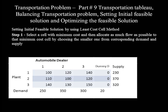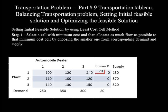Step one: select the cell with minimum cost and allocate as much flow as possible to that minimum cost cell by choosing the smaller value from the corresponding demand and supply. The minimum transportation cost is zero. Three cells — those under the column of the dummy destination — are tied with this minimum cost. The smaller value from the corresponding demand and supply that can be allocated to each of these three cells is the same, that is 20. So we can choose either of them as the least-cost cell. For this problem, let's choose the cell at the intersection of row 1 and column 4, and allocate 20 to this cell.